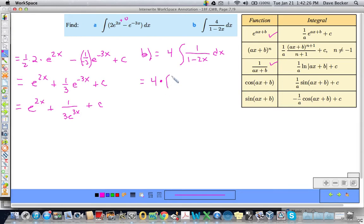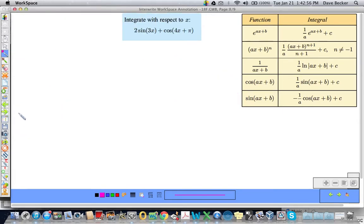So that would be equal to 4 times 1 over A. Well, the A is negative 2, so that's times negative 1 half times the natural log of the absolute value of AX plus B or 1 minus 2X plus C. So that's going to be equal to negative 2, 4 times negative 1 half, natural log of the absolute value of 1 minus 2X plus C. Done, done, done. Life is so good. This is so easy.